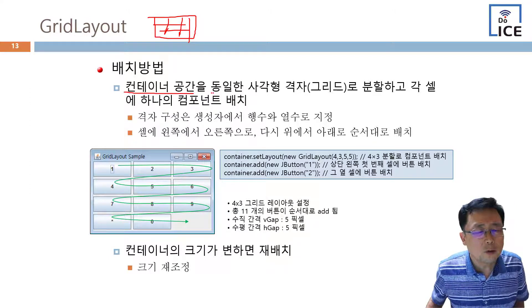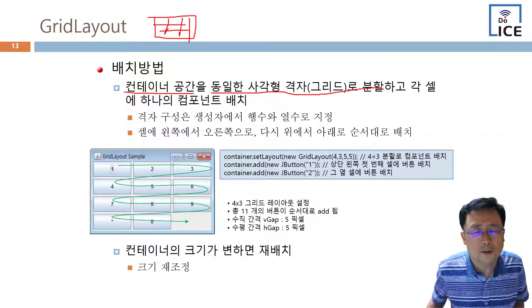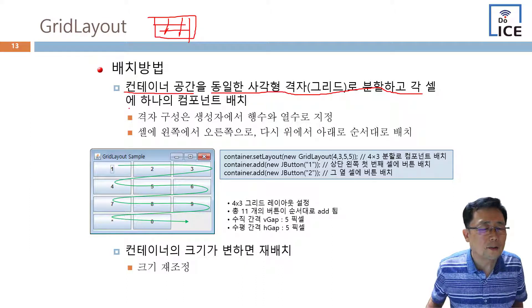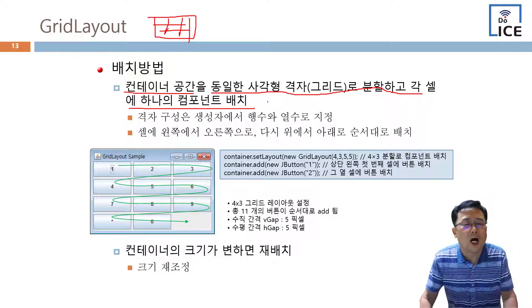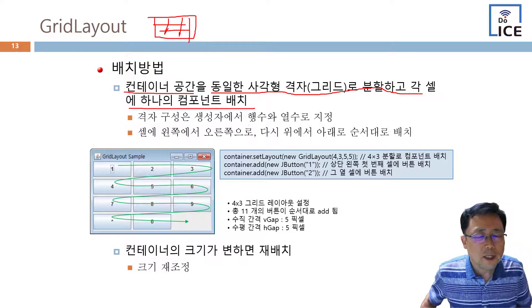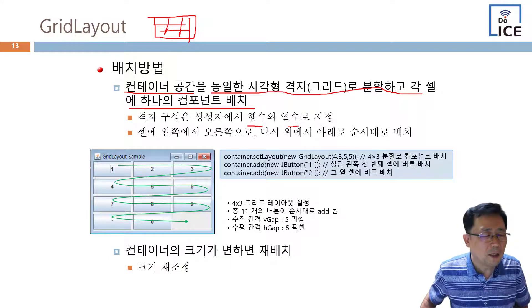Container 공간을 동일한 사각형 격자로 분할하고 각 셀에 하나씩 컴포넌트를 배치하는 거다. 격자 구성은 행수와 열수로 한다. 행수는 이거죠.